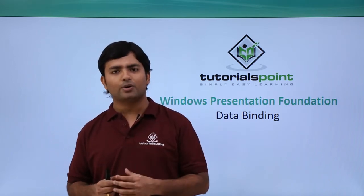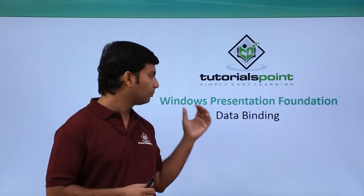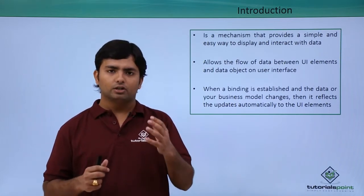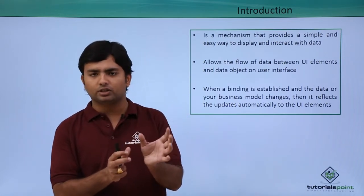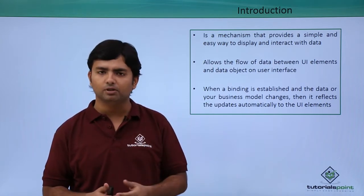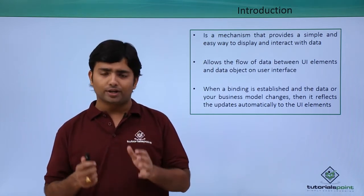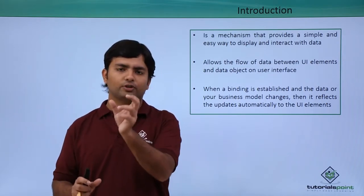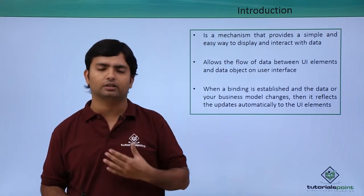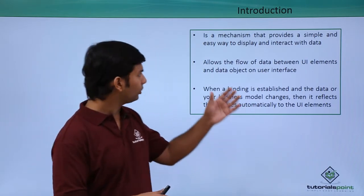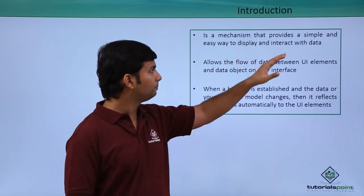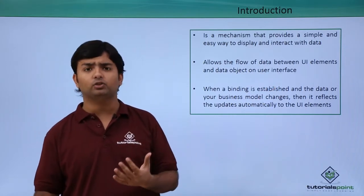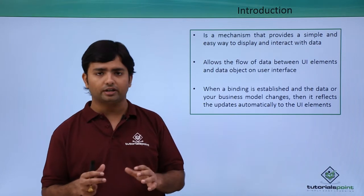In this particular chapter we are going to discuss data binding. Data binding is when you get the data into a particular user control such as a TextBox or Label from a particular data source. When you do the binding, you specify which field from the data source you want in a particular TextBox or other control. It is a mechanism that provides a simple and easy way to display and interact with data.